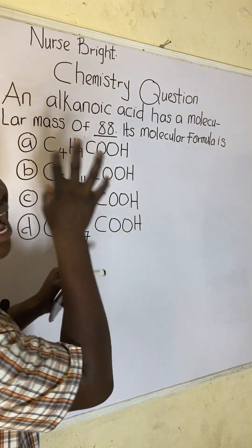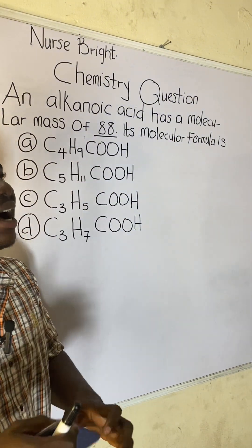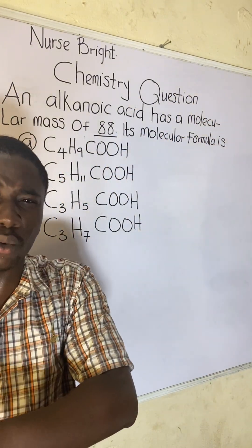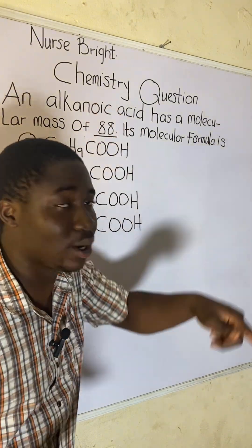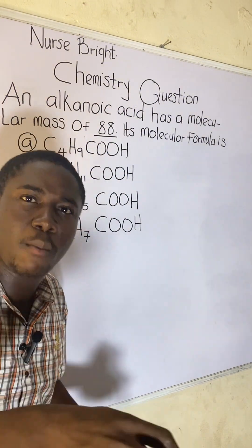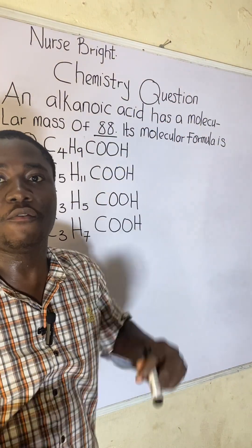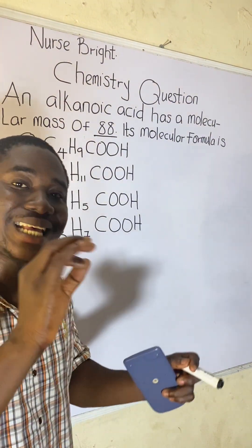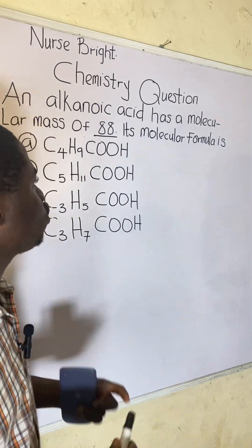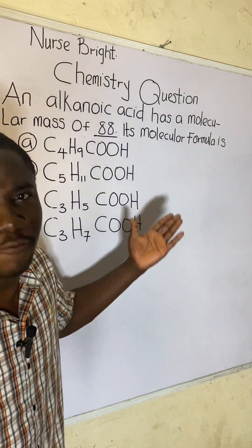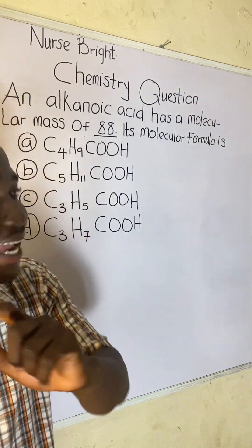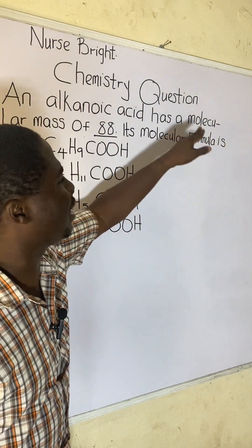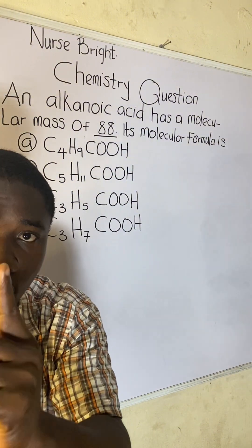Remember, when it comes to this aspect of chemistry, a compound can exist in two different formulas. We have the empirical formula and we have the molecular formula. They are asking us to get the molecular formula. The molecular formula is simply the actual formula of that particular compound, whereas the empirical formula is simply the simplest form to which that compound can exist. They've given us the molecular mass of the compound, which is 88.